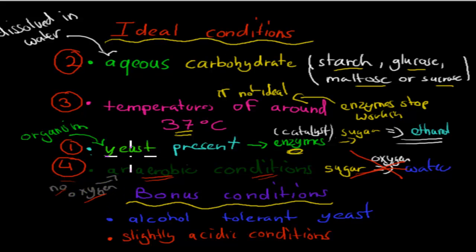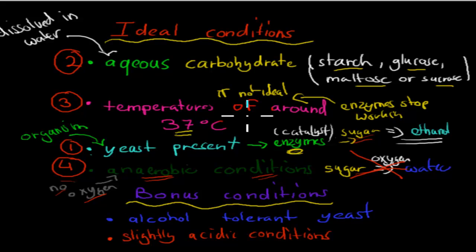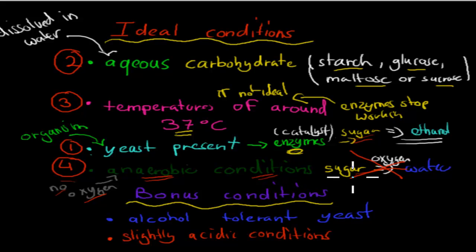To recap the four conditions: first, yeast must be present because yeast produce enzymes that help break down sugars into ethanol. Second, aqueous carbohydrates — dissolved in water — so the yeast can make contact with them. Third, a temperature of around 37 degrees Celsius, because enzymes don't work properly if the temperature is too high or too low. Fourth, anaerobic conditions with no oxygen, because oxygen would cause sugar to turn into water rather than ethanol.